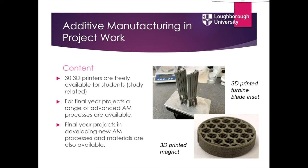Within the Wilson School we have approximately 30 3D printers that are freely available to students to do their project work on — either as part of the modules I just described or any other project you might have throughout your studies. You can also use additive manufacturing as part of your final year project, doing anything from fixtures and fittings to going deep into additive manufacturing using some of our more advanced processes. Two examples of final year project topics include a 3D printed turbine blade insert and 3D printed magnets made by a student as part of their final year project.